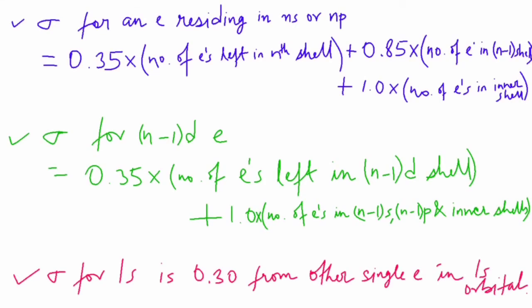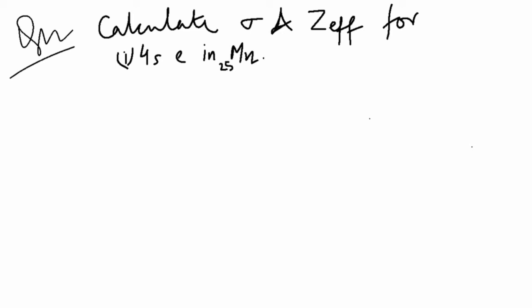Now let's solve some questions to find out the sigma and effective nuclear charge. The questions are: calculate sigma and Z_effective for (1) 4s electron in manganese atom, (2) for the last electron present in chlorine atom, and (3) for d electron in copper. Now let's solve these questions which are important as they come in BSc exams.